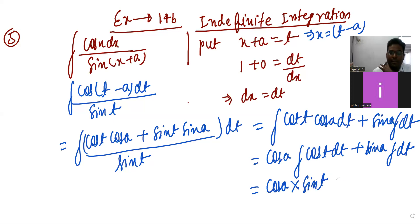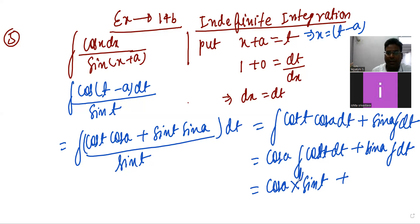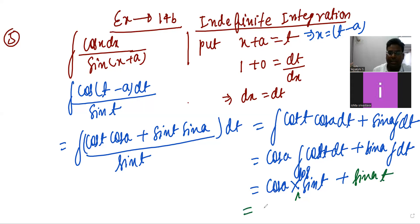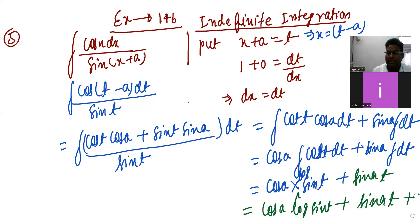It is cot(t). Cot integration is log|sin(t)|. So the answer is: cos(a)·log|sin(t)| + sin(a)·t + C. This is the final answer.